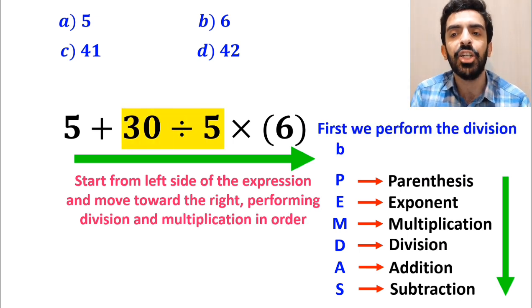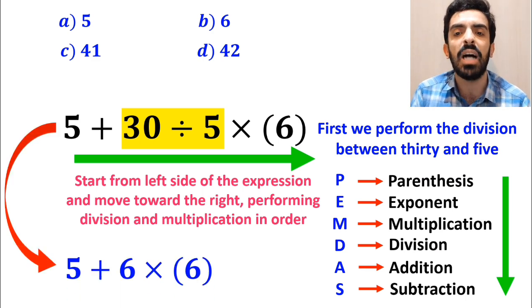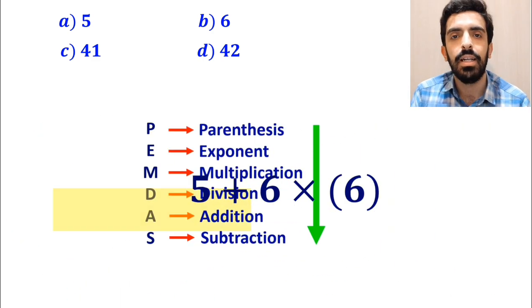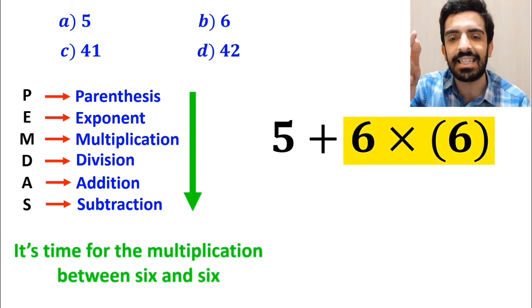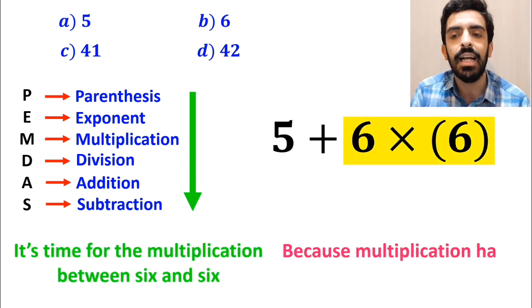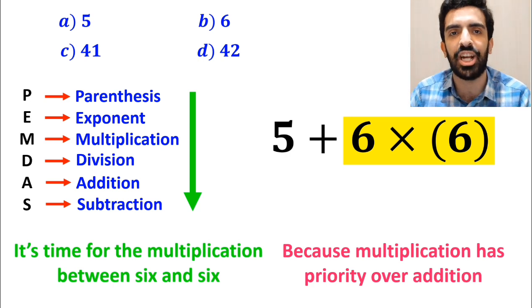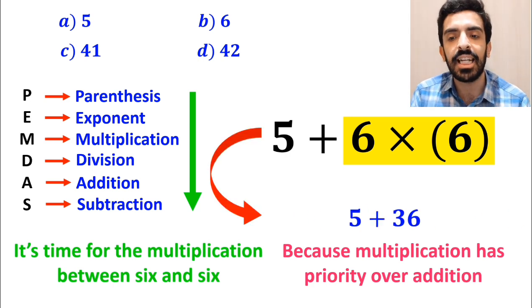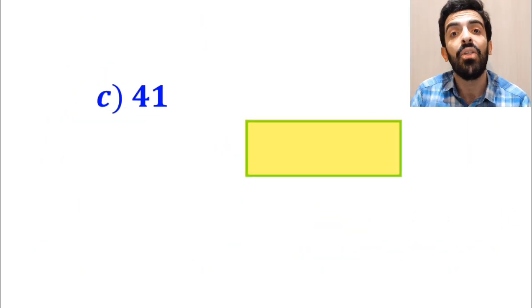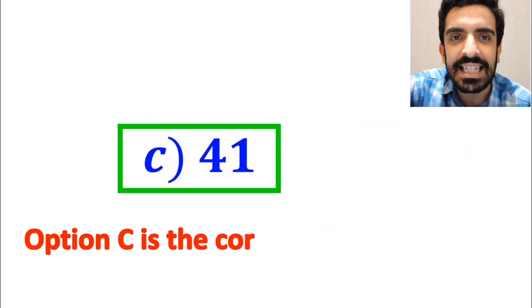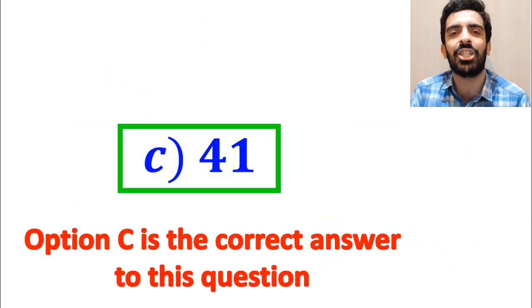So first we perform the division between 30 and 5, which simplifies this expression to 5 plus 6 times 6. And the final step, it's time for the multiplication between 6 and 6, because multiplication has priority over addition. So instead of this expression, we can write 5 plus 36, which ultimately gives us the answer 41. Therefore, option C is the correct answer to this question.